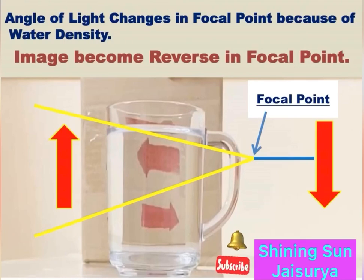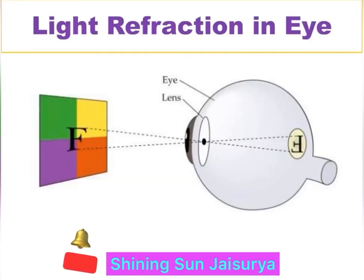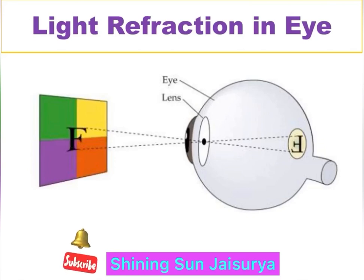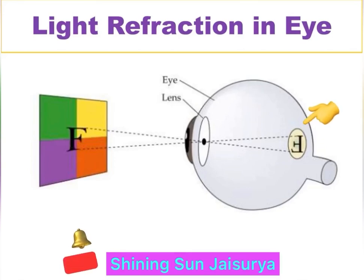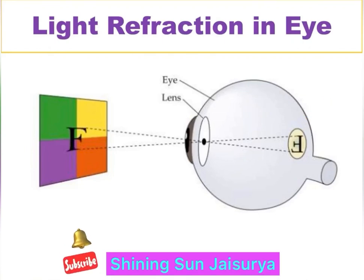That's the reason we see the arrow's direction changed. The same refraction is happening while we see any object through our eyes. Our eyes receive only the reverse image first. The brain changes the image to its original position.